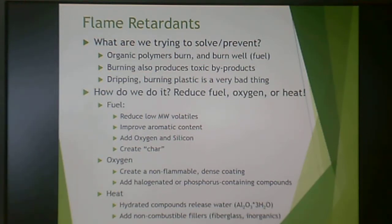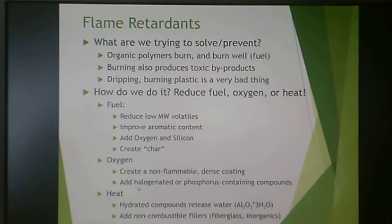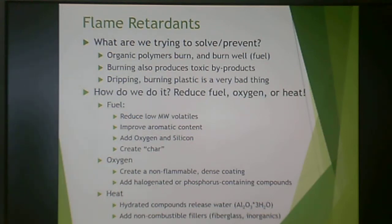We can also reduce oxygen — you need oxygen to burn, so something can have a non-flammable dense coating. A lot of children's clothing has a flame retardant layer. You can also add halogenated or phosphorus-containing compounds, though these are environmentally frowned upon and a lot of work is being done to avoid them. You can also reduce heat by adding a hydrated compound to release water when heated — hydrated aluminum oxides — or a non-combustible filler like fiberglass or other inorganic fillers that you can heat up but won't burn.